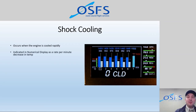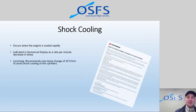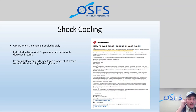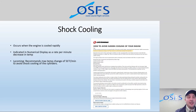Shock cooling is indicated in the numerical display as a rate in degrees per minute. Per Lycoming service letter 1094 delta, you should keep your temperature change less than 50 degrees Fahrenheit per minute to avoid shock cooling. Surprisingly, we've even seen cooling as much as 30 to 40 degrees Fahrenheit just from a normal circuit pattern — when in the downwind making a power reduction to base leg, going from cruise power to around 1,500 RPM, we can easily get 30 to 50 Fahrenheit difference. So it's not hard to exceed this number, at least in the 172M.